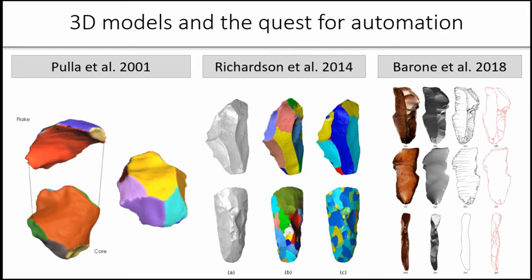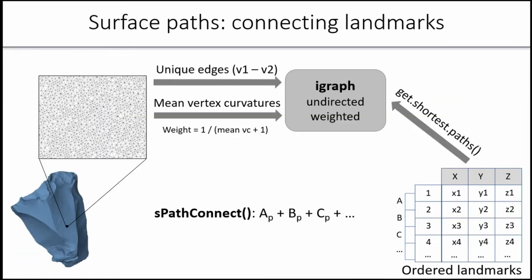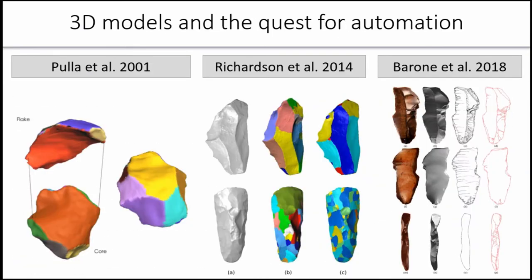There has been some progress since then. In 2014, Richardson et al. presented a method that seemed really quite promising. These are the kind of results they were obtaining. Unfortunately, there hasn't been a follow-up to this work as far as I know. In 2018, Barone et al. published a way of extracting these kind of outlines. They were pursuing automatic artifact illustrations based on 3D scans, and that also requires us to be able to detect components of interest.